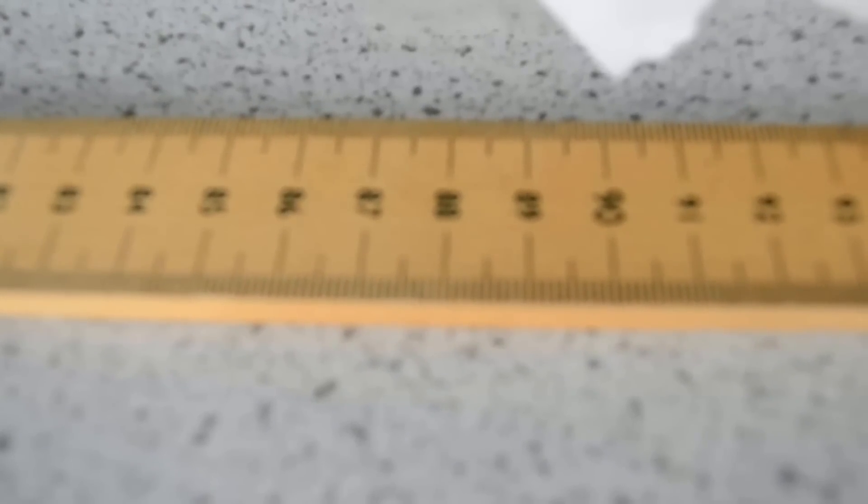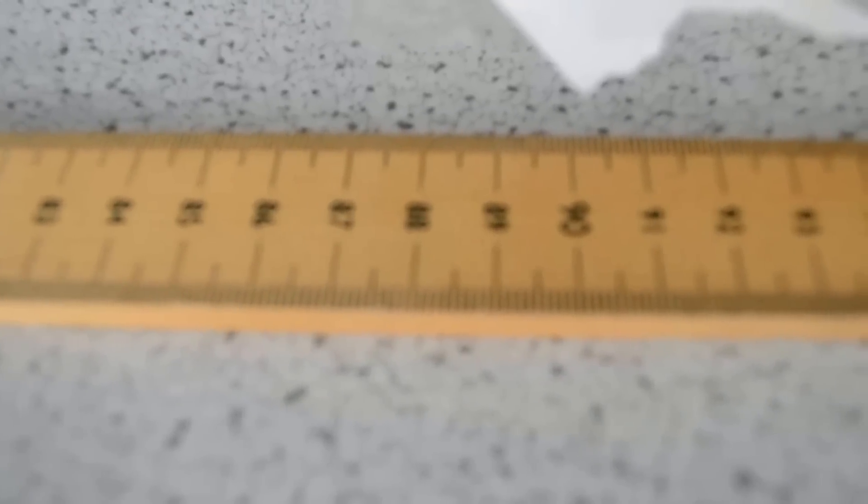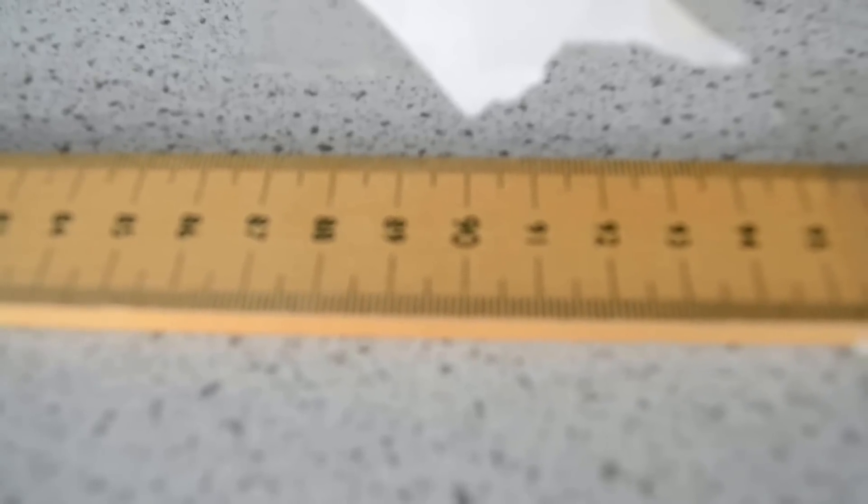We need to be careful to avoid parallax errors when we're reading off our scale here. So it's important that we get our head perfectly in line with the marker and the ruler. So you can see here our marker is pointing at 90.